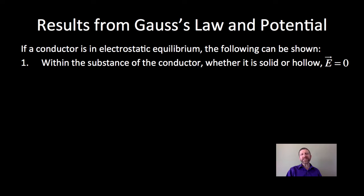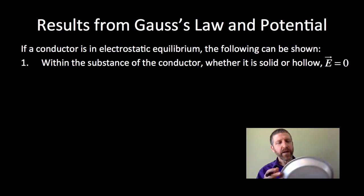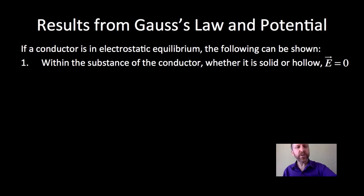As long as there's no net motion of charge, I mean charges will randomly have thermal motion anyway, but as long as there's no net motion, in other words there's not a bunch of negative charge moving from here to over there or positive charge moving from there to there. As long as there's no net motion of charge, the conductor is deemed to be in electrostatic equilibrium. Our results from Gauss's law and potential chapters are as follows and are very important for this chapter. If a conductor is in electrostatic equilibrium, the following can be shown: within the substance of the conductor, whether solid or hollow, the electric field equals zero.